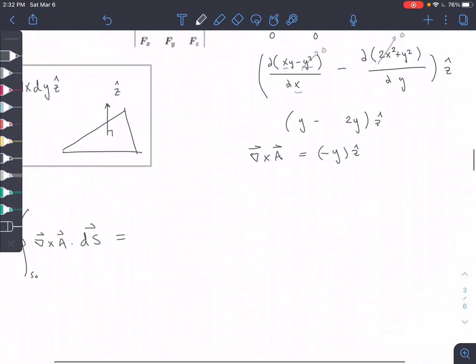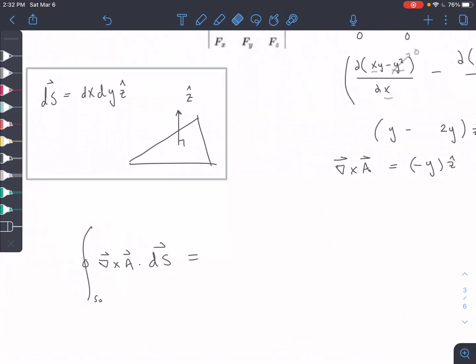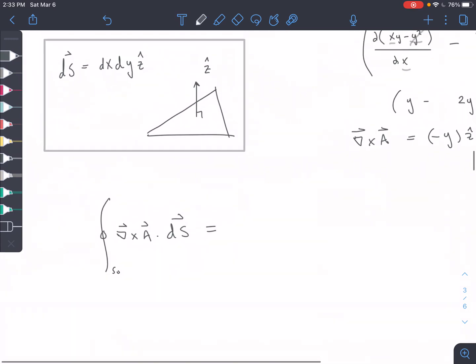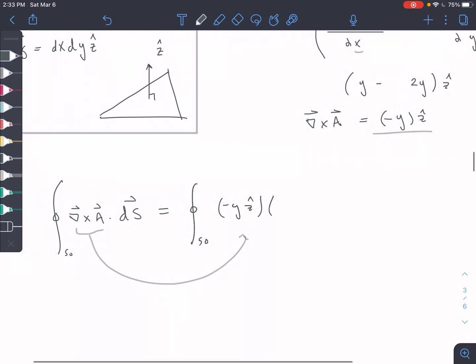Let's go ahead and set up our integral next. So our DS for this surface, we have a change in X and change in Y. So it's a 2D surface. So we have the differential surface, those two changes, and then Z is our normal vector to that surface just coming out. So we're going to use that in our equation here. So plugging in our curl from here. And then we have DX, DY, the Z-hat direction.